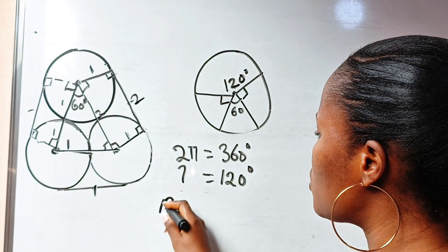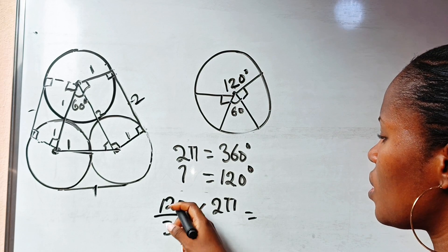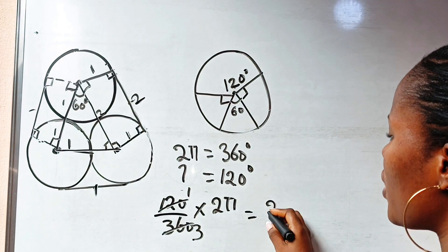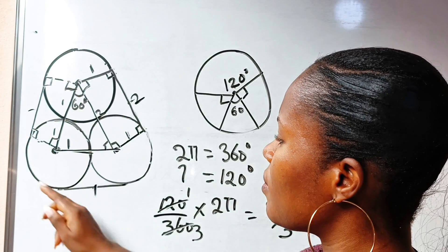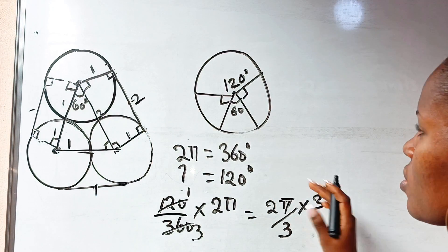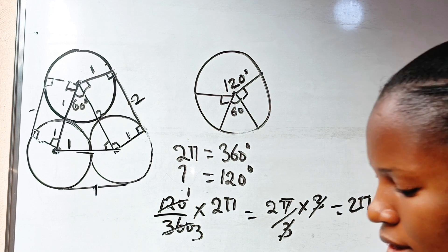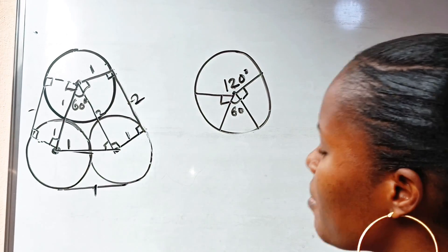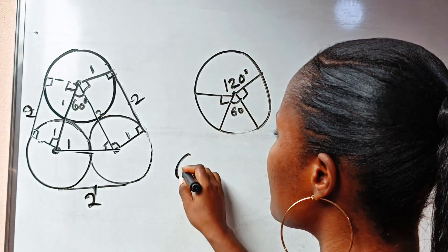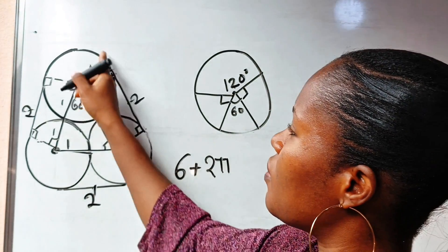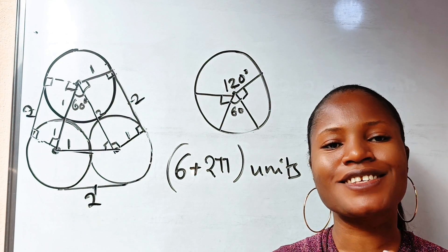We have three of these arcs, so we multiply 2π/3 by 3, which gives us 2π for the total curved portion. That means the total length of the band is 6 (from the three straight segments) plus 2π (from the three arcs), giving a final answer of 6 + 2π units. Thank you so much for watching — see you in the next video.